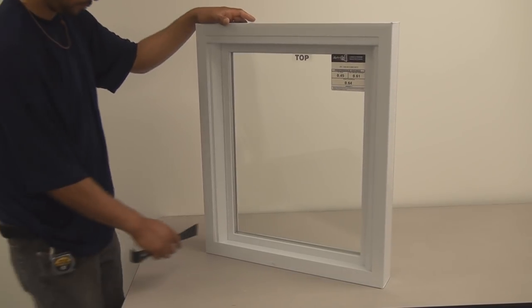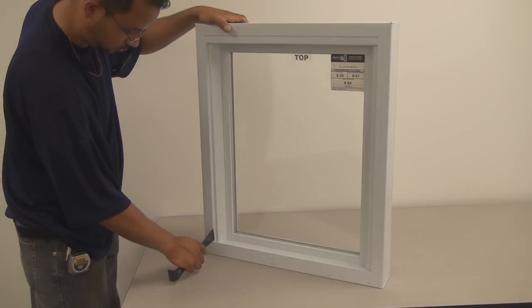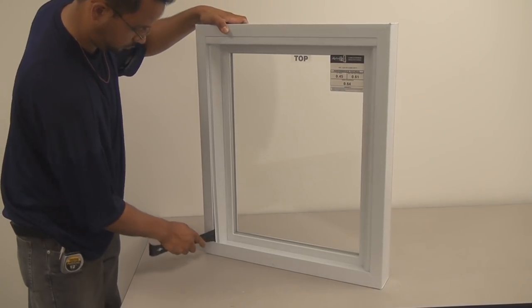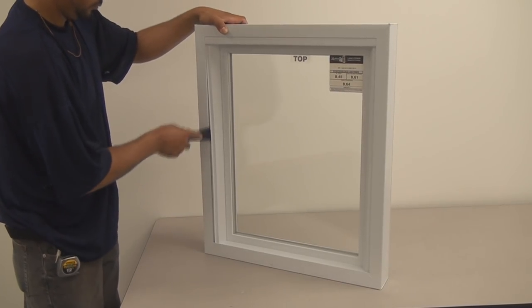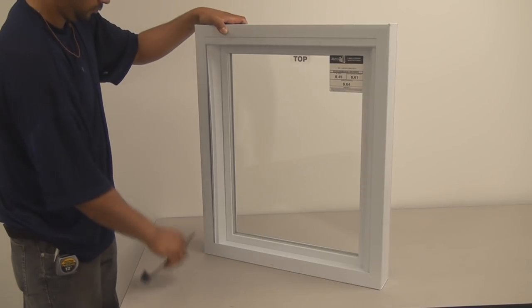First, you'll need a pry bar. Put the pry bar in between the master frame and the snap-in glazing piece. Please be careful with the amount of pressure you're putting on either piece.